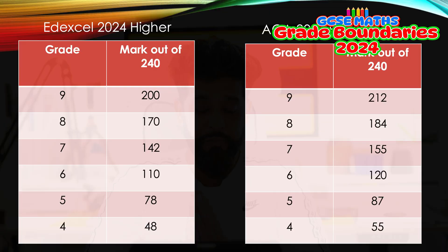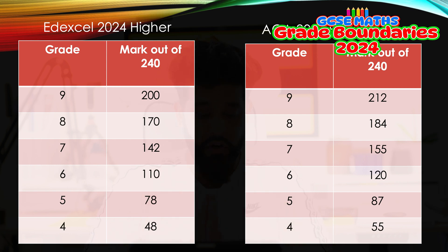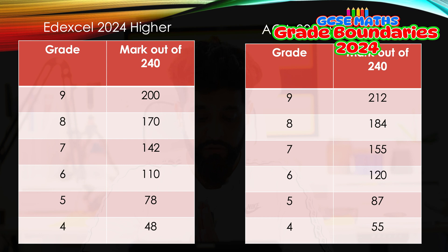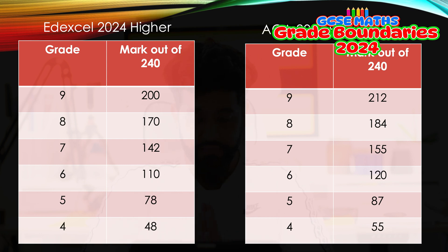So for Edexcel higher paper: grade nine — 200 marks. That's what I feel students should be aiming for. A grade eight — 170. A grade seven — 142. This is all for the higher paper by the way; I haven't done this for foundation, just for the higher. You can follow the rest from the screen.